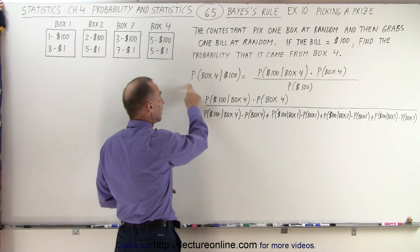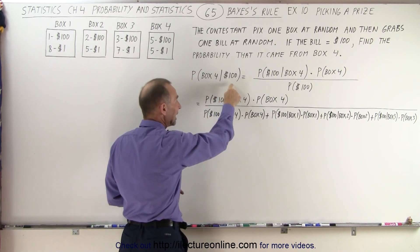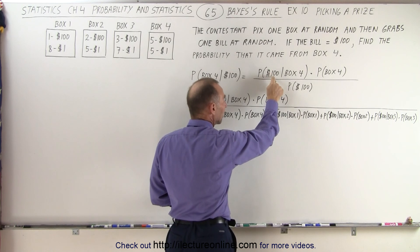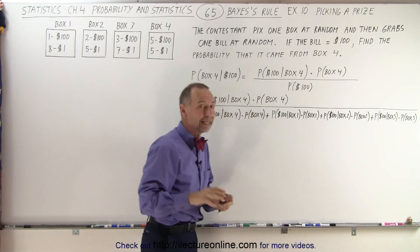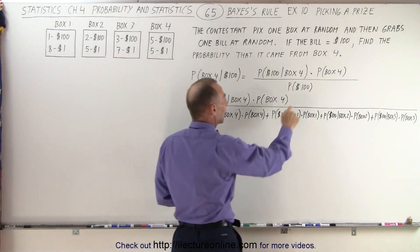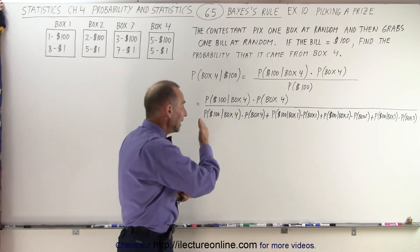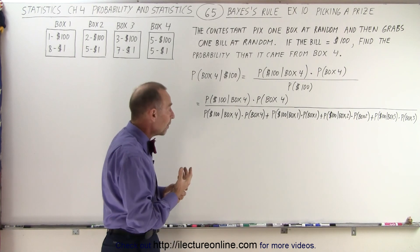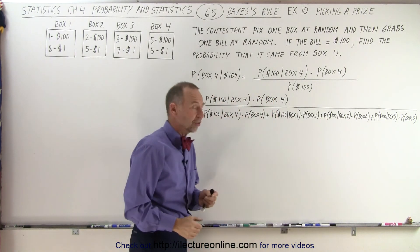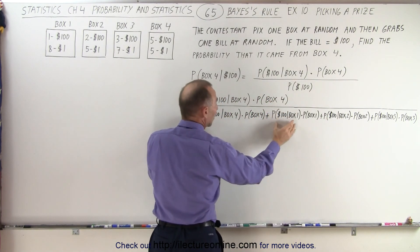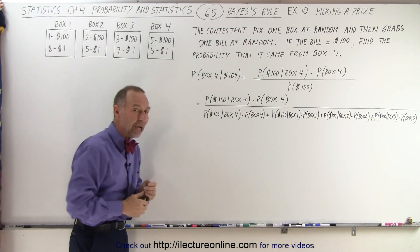Well, the equation is that the probability that the bill came from box four, given that we picked a $100 bill, equals the probability that we'll pick a $100 bill if it came from box four, or given that it came from box four, times the probability that we picked box four, divided by the probability of picking a $100 bill. And of course, that depends upon each box, the probability of picking each of the four boxes plus the probability of having a $100 bill in each of the four boxes. So we start out with copying this, but then we also have to account for the probability of picking a $100 bill if it came from one of the other three boxes.